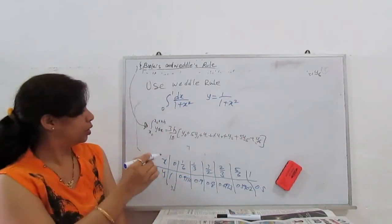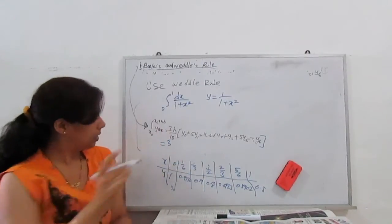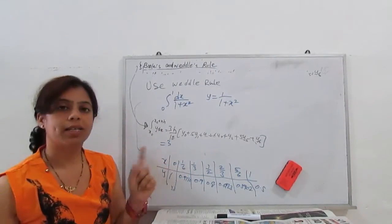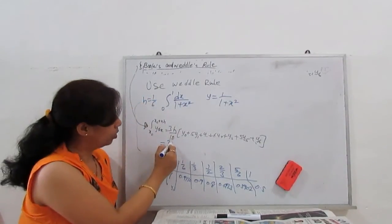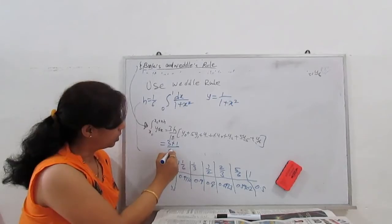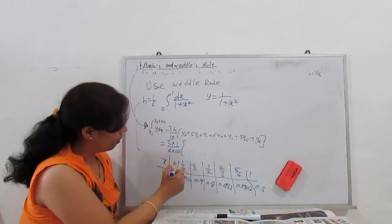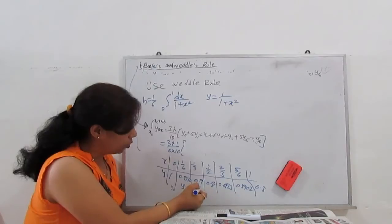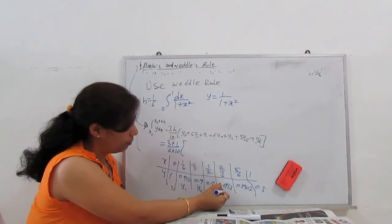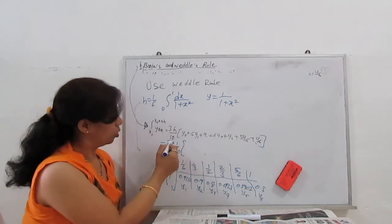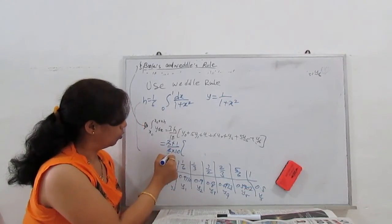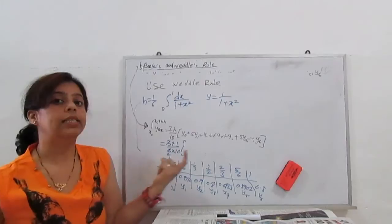I substitute 3h by 10. 3h is... 0 to 1/6, so our h I use is 1/6. So I put times 1/6 times 10. My y0 is this, y1, y2, y3, y4, y5, and y6. So 1 by 20 is outside.